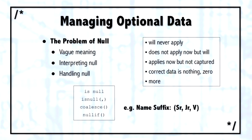Another reason is that it applies now but it's not yet captured — for example, a new employee who is hired who should have a social security number but has not yet been entered. Another time when people use null is when it's correct that there is nothing there — for example, the name suffix. That does not apply now; it never will.